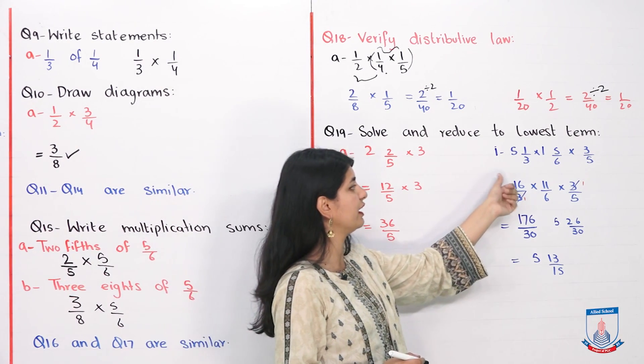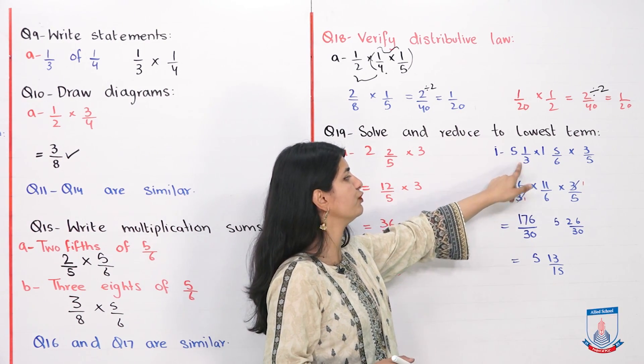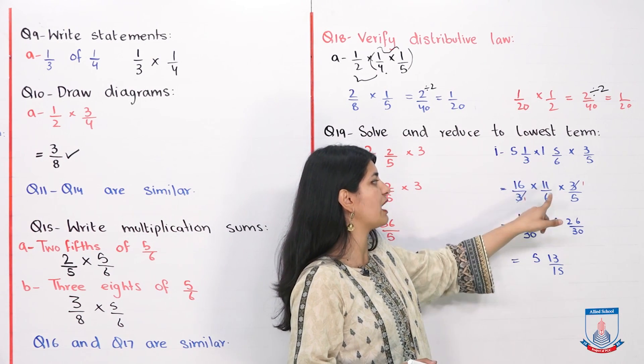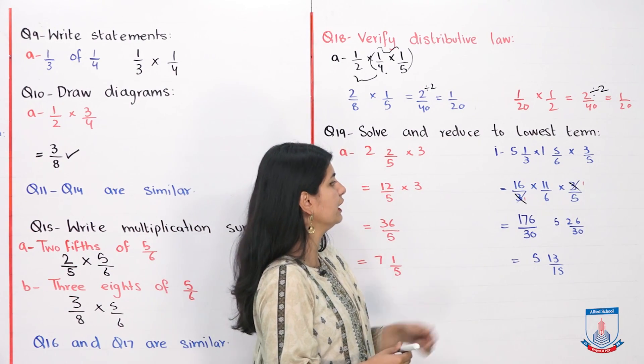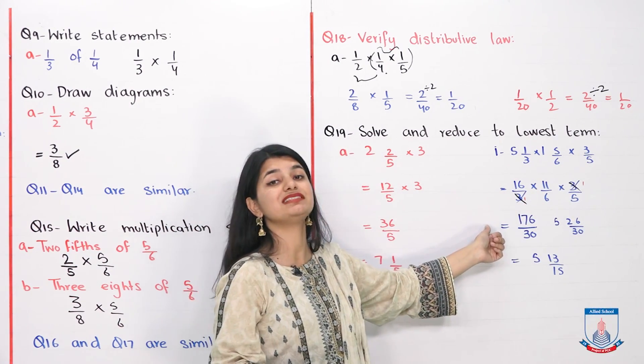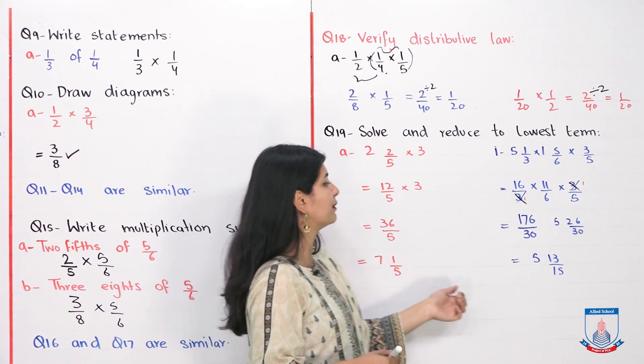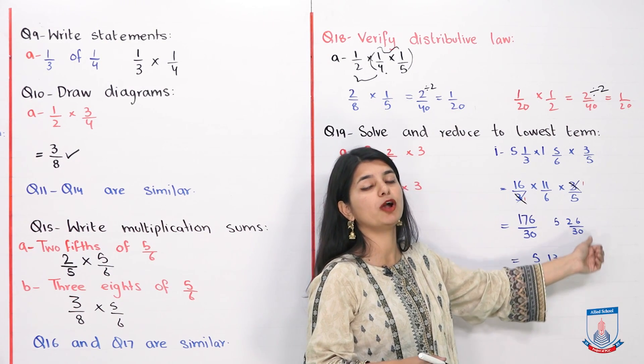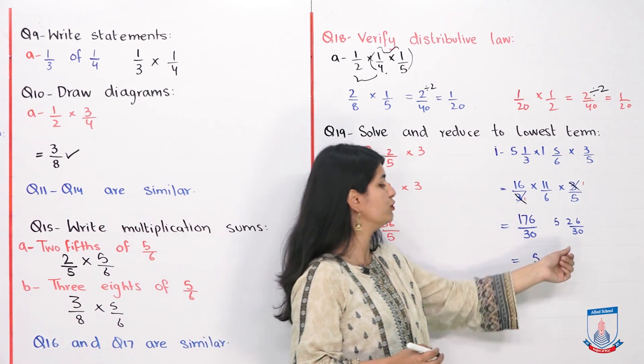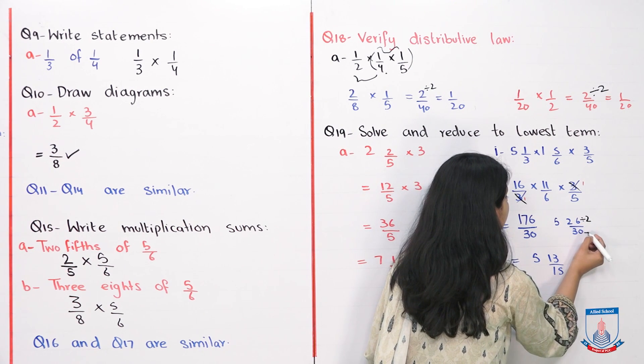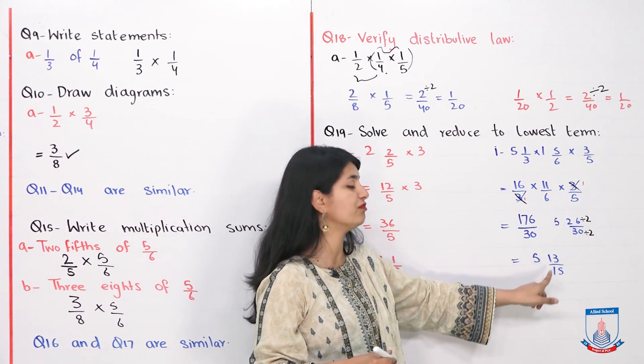If we see the last part of this question, 5 whole 1 over 3 into 1 whole 5 over 6 into 3 over 5. Again, you will make improper fractions. 5 into 3, 15 plus 1, 16 over 3. Then 6 into 1 plus 5 is 11 over 6. 3 over 5 is as it is. Now we will do cancel out. 3 from 3 to 3. We have 16 into 11, which is 176. We have 6 into 5 is 30. So we have 176 divided by 30. You have answer is 5 into 30. 150. Whole number is 5. 26 over 30. Now how can we do this further simplify? We divide both into 2. 26 divided by 2, 30 divided by 2. 26 divided by 2 is 13, and 30 divided by 2 is 15. So your answer is 5 whole 13 by 15.